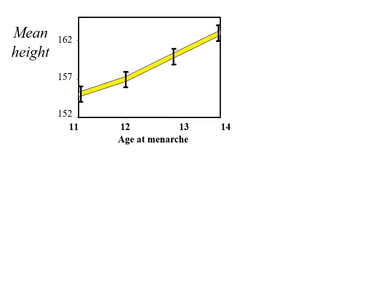Many years ago, Rose Frisch in the 1970s was trying to understand what controlled the age of menarche in girls by looking at their bodily condition. Looking at girls reaching menarche at age 11 — they had a height of about 155 centimetres; at age 12 a bit bigger, 13 bigger again, 14 bigger again. This doesn't say very much other than that girls grow with age.